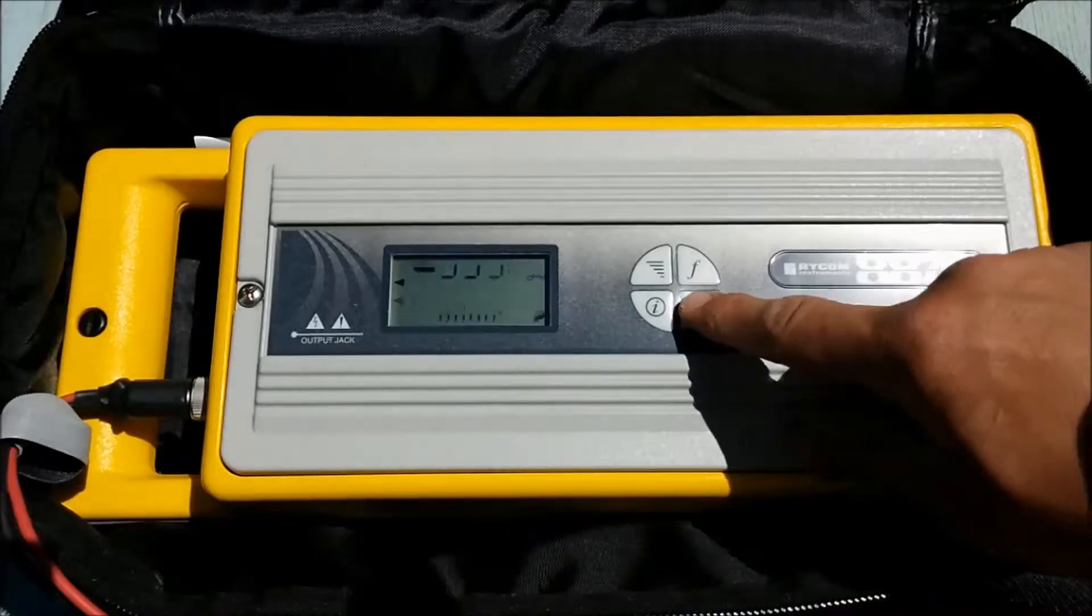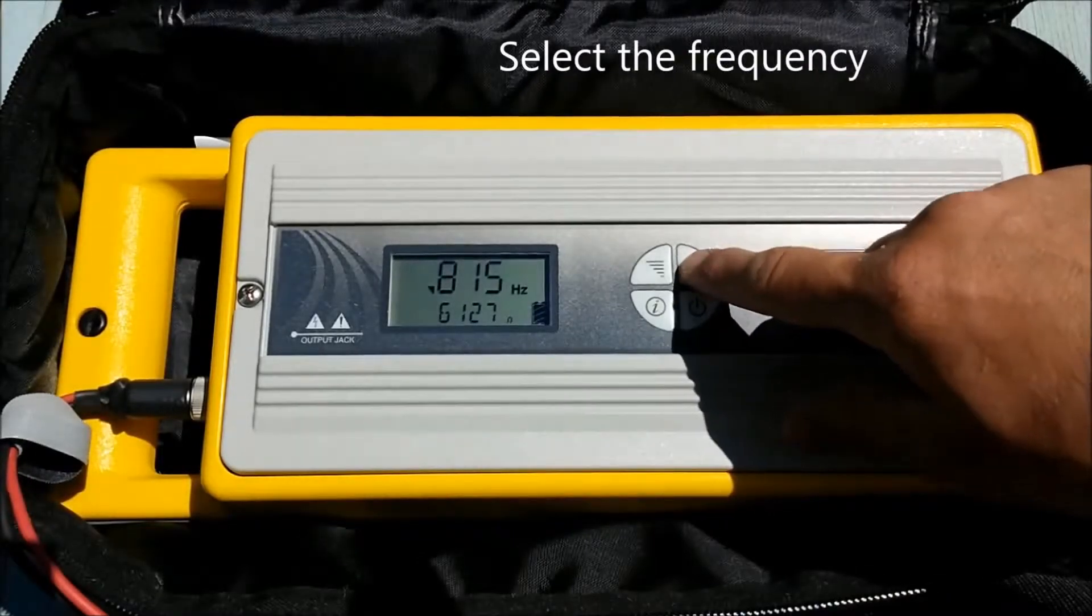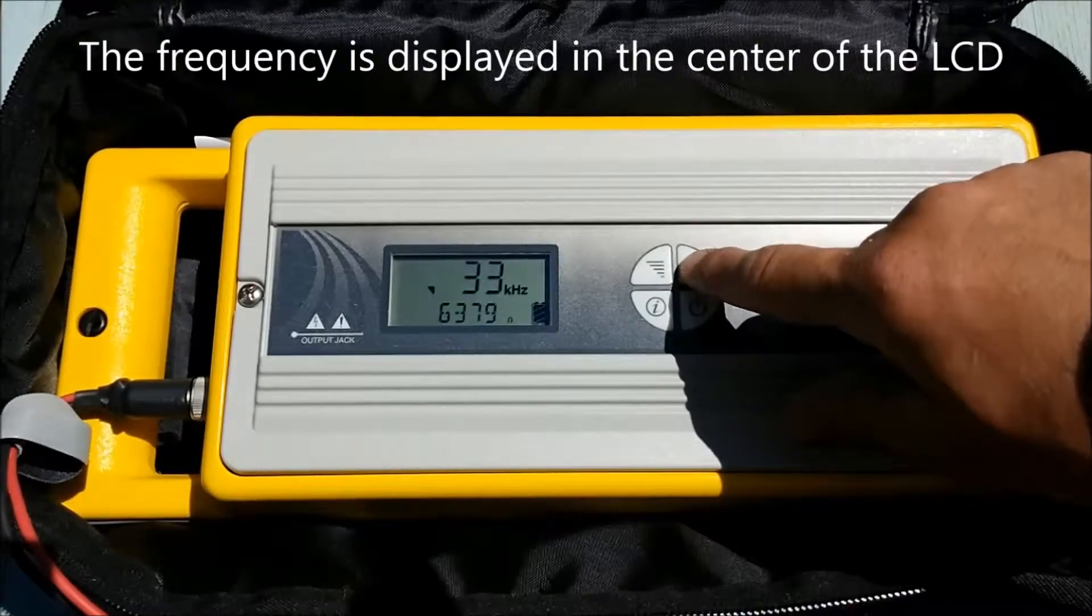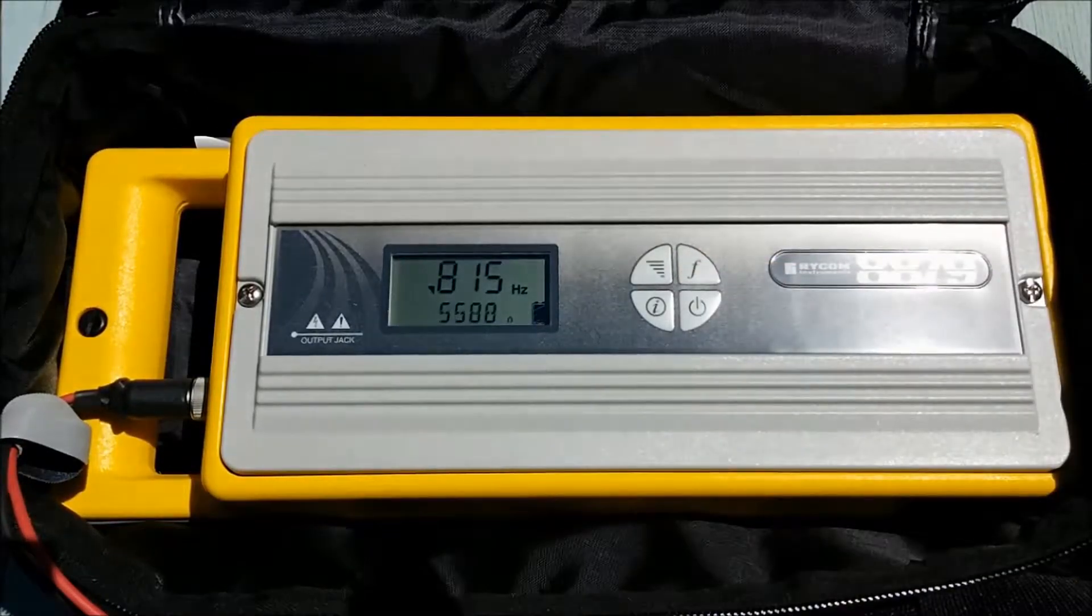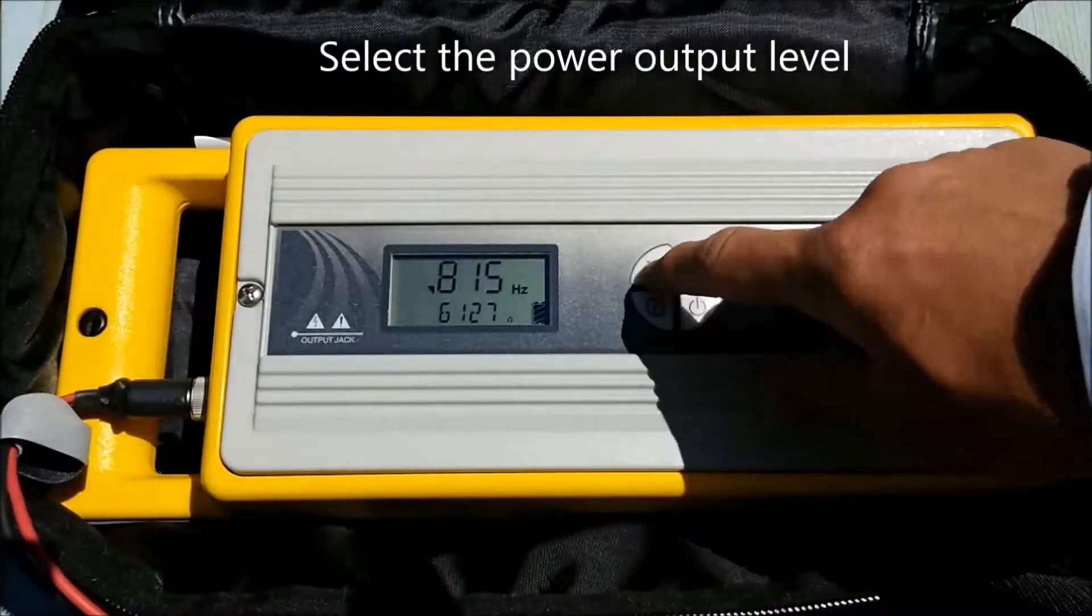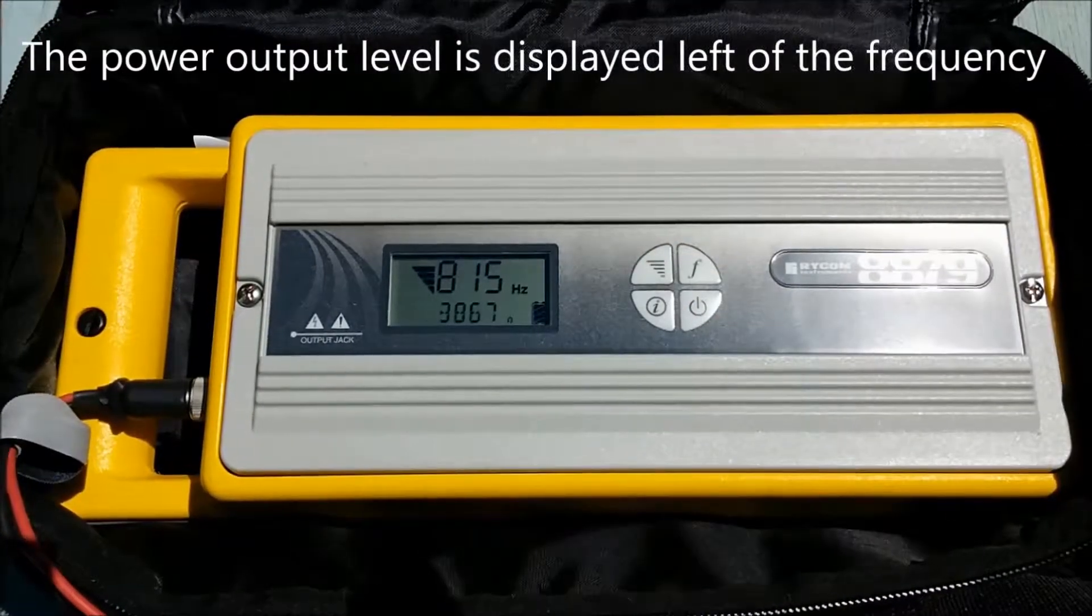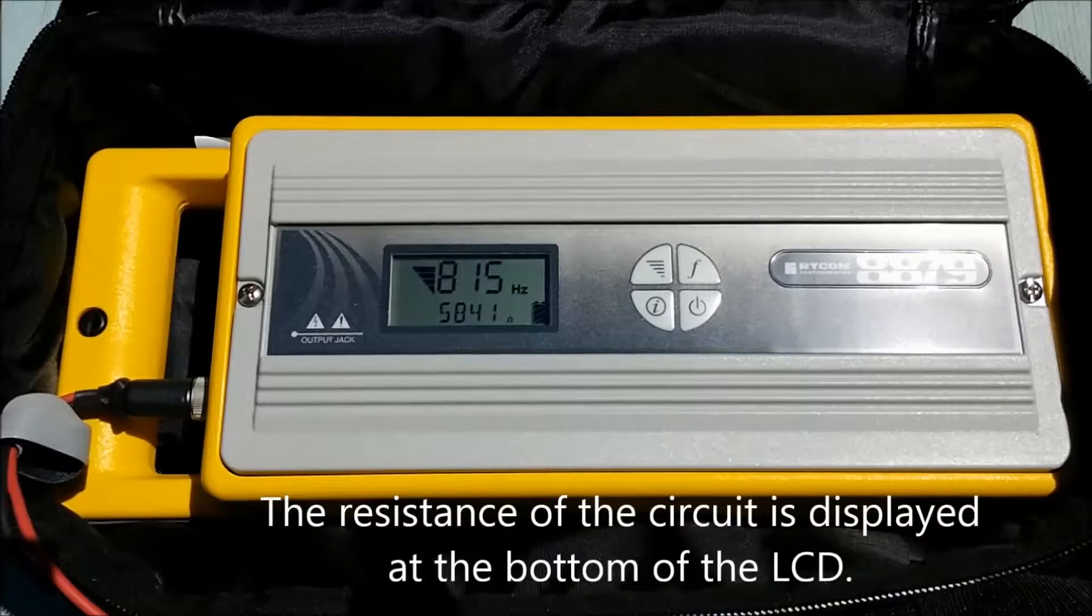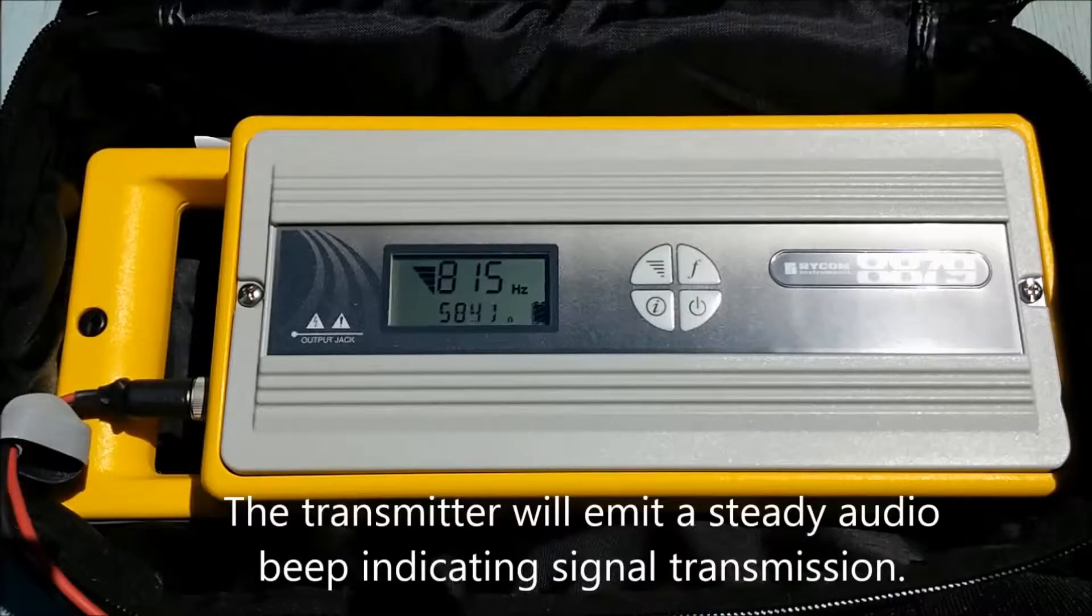Once the signal application method has been applied, turn the transmitter on. Using the frequency button, select the desired locate frequency. The frequency is displayed in the center of the LCD. Once the desired frequency has been chosen, select the power output level. The power output level is displayed left of the frequency. The resistance of the circuit is displayed at the bottom of the LCD. The transmitter will emit a steady beep indicating signal transmission.